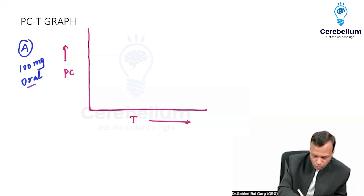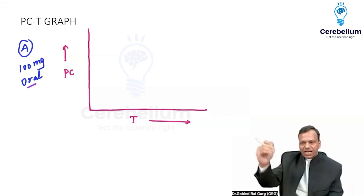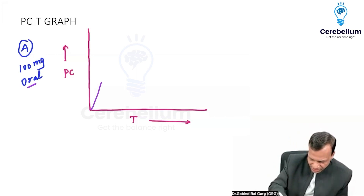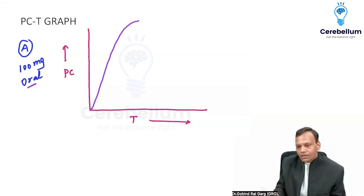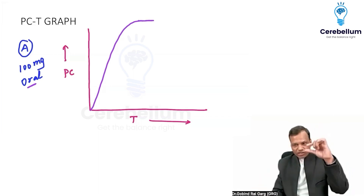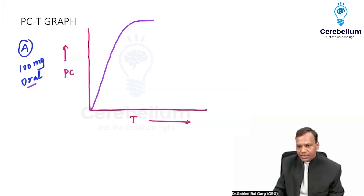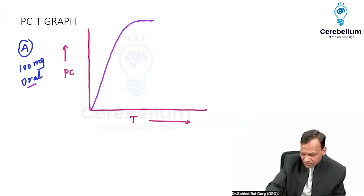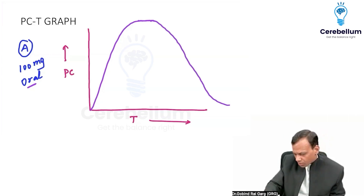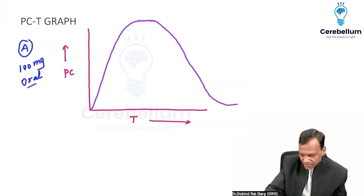When we are giving the drug orally, initially the plasma concentration will start increasing because absorption will take time. The concentration keeps increasing until it becomes maximum. At that maximum point, the rate of absorption is equal to the rate of elimination. After that, plasma concentration starts decreasing as the rate of elimination becomes greater than absorption.